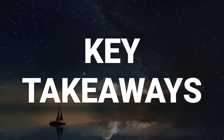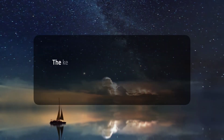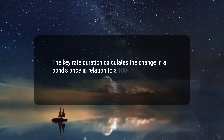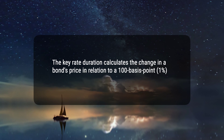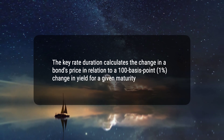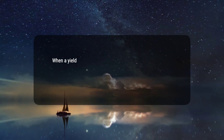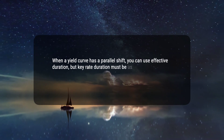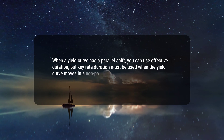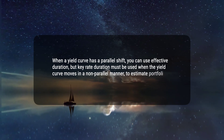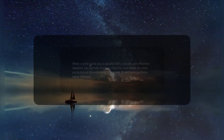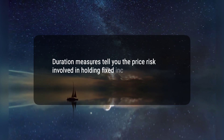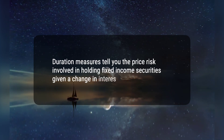Here are three key takeaways. 1. The key rate duration calculates the change in a bond's price in relation to a 100 basis point, or 1%, change in yield for a given maturity. 2. When a yield curve has a parallel shift, you can use effective duration, but key rate duration must be used when the yield curve moves in a non-parallel manner, to estimate portfolio value changes. 3. Duration measures tell you the price risk involved in holding fixed income securities given a change in interest rates.